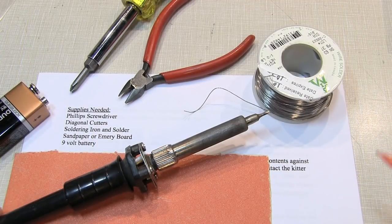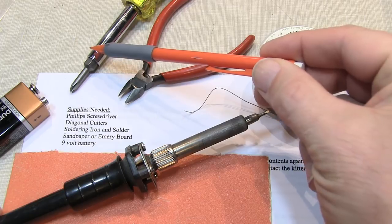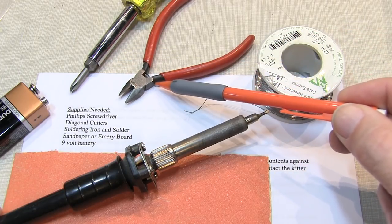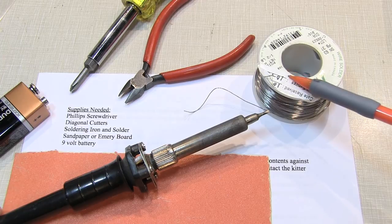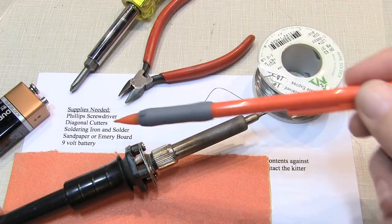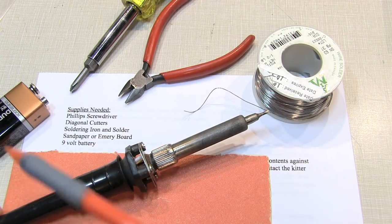The supplies you'll need to build this kit are a Phillips head screwdriver, a pair of diagonal cutters, soldering iron and some solder, sandpaper or emery board, and a 9-volt battery.